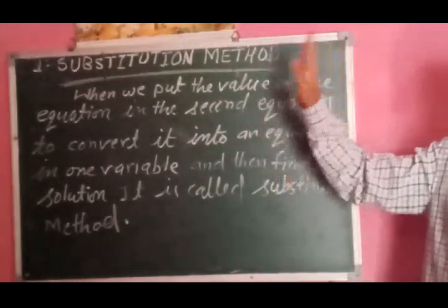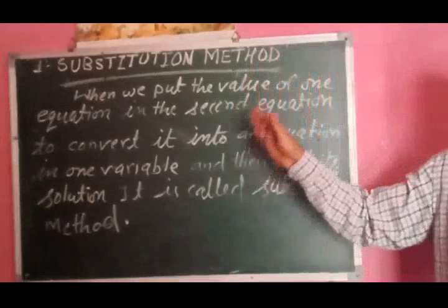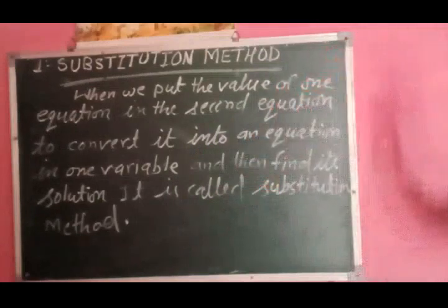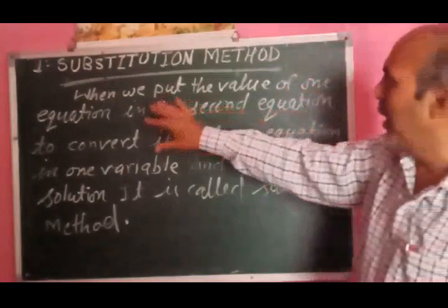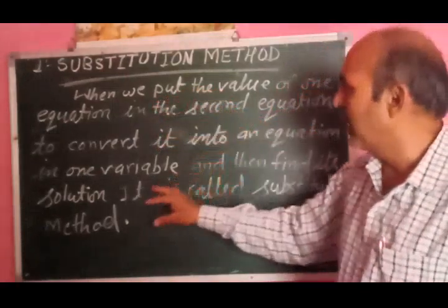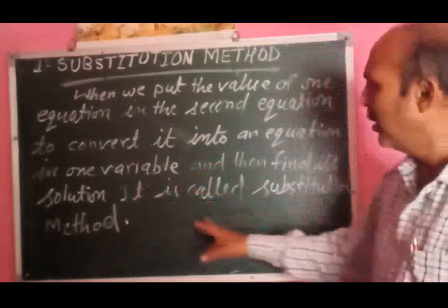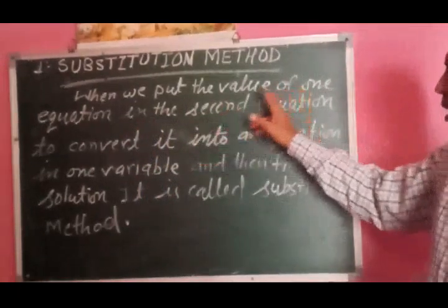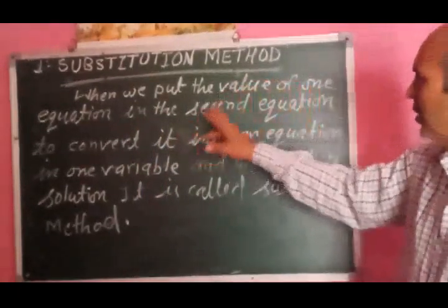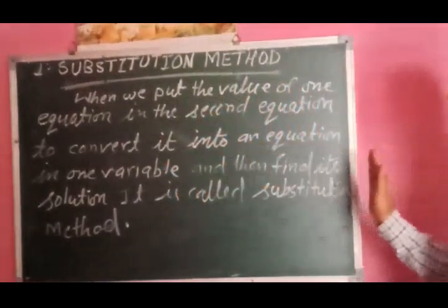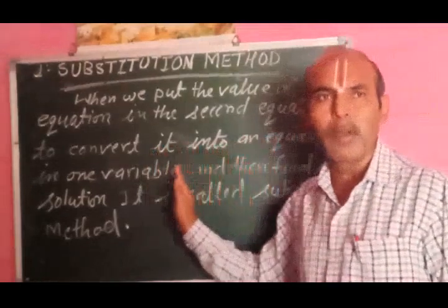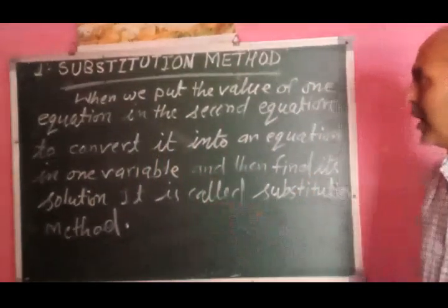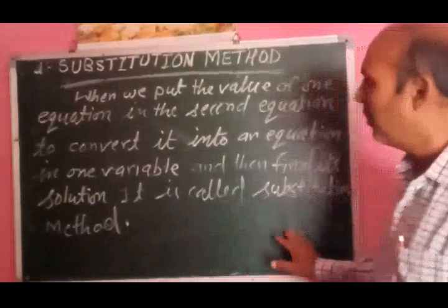जब हम one variable का मान दूसरे equation में रख देते हैं, तो उससे एक one variable से कार equation बन जाता है — उसे हम substitution method कहते हैं. जब हम first equation का मान second equation में convert कर देते हैं, तो one variable प्राप्त होता है.